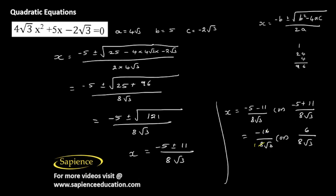16 divided by 8 is 2. And over here, 6 divided by 2 is 3, and 8 divided by 2 is 4. Then root 3 will get canceled with root 3. The value of x is minus 2 by root 3, or root 3 by 4.